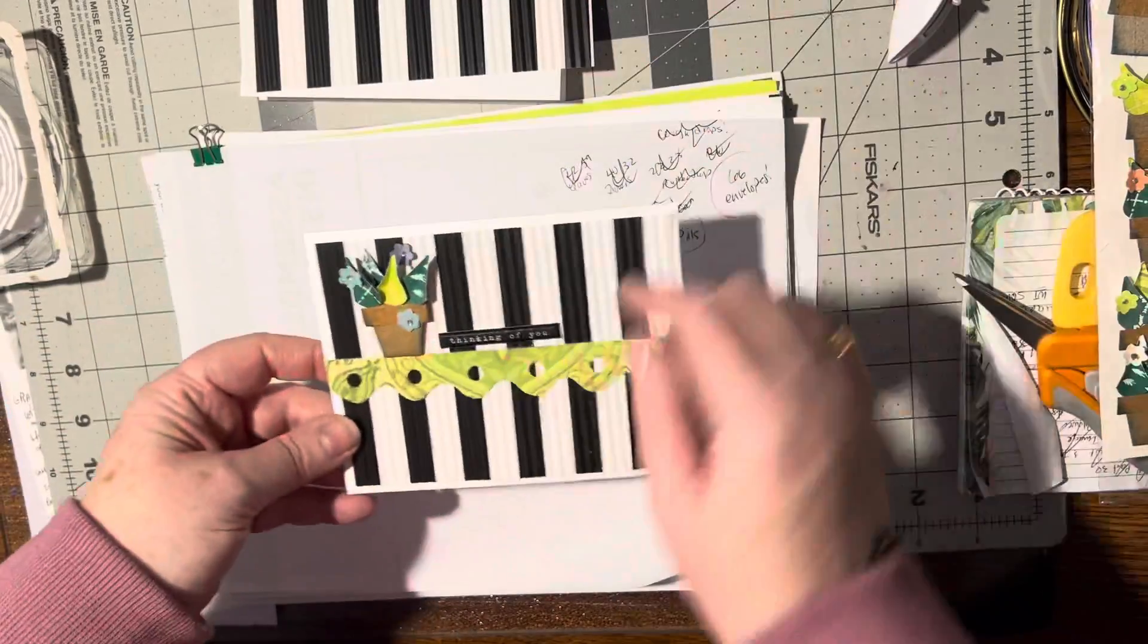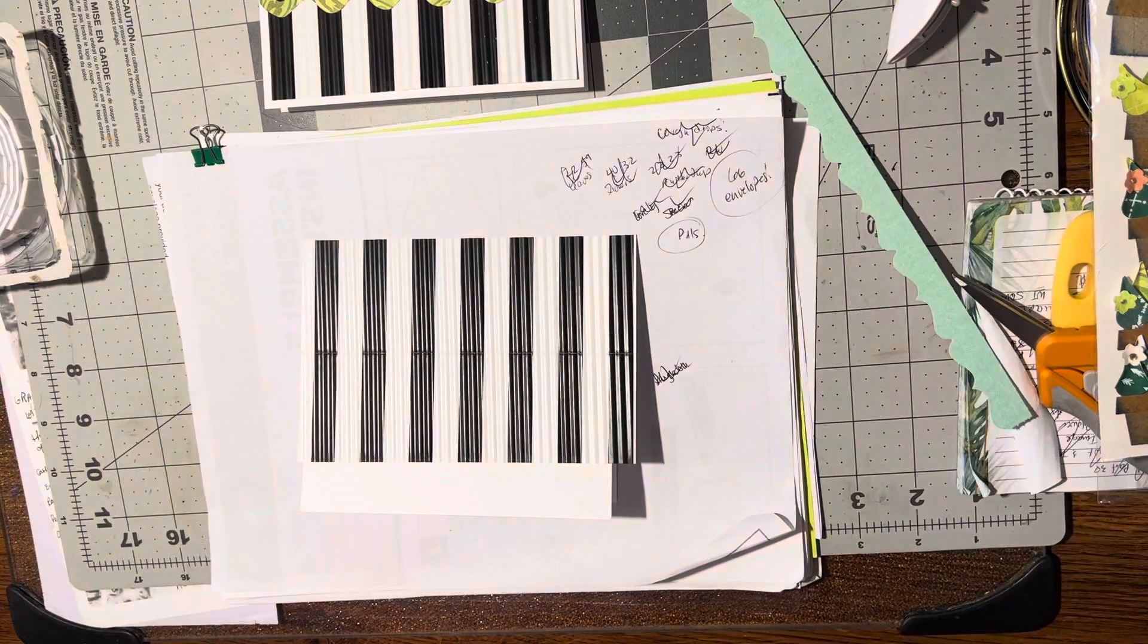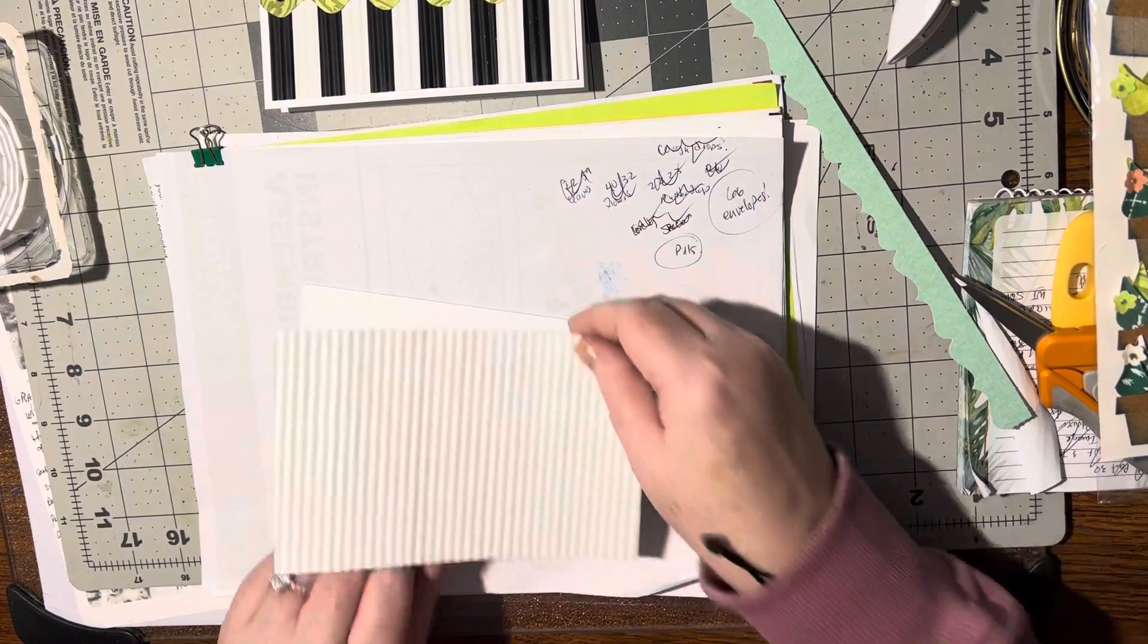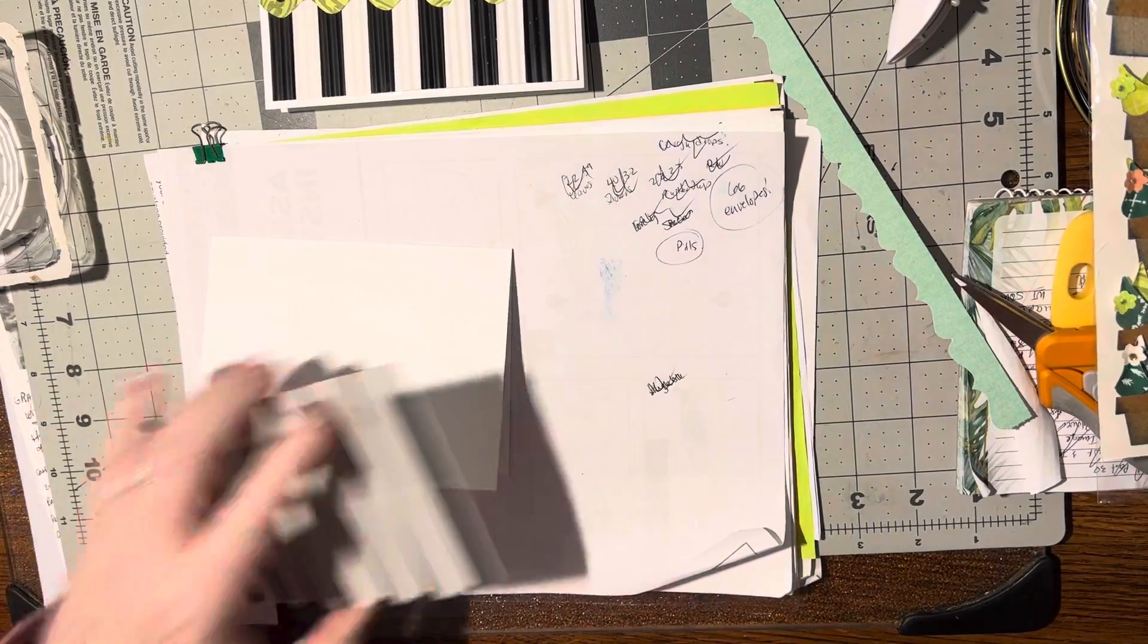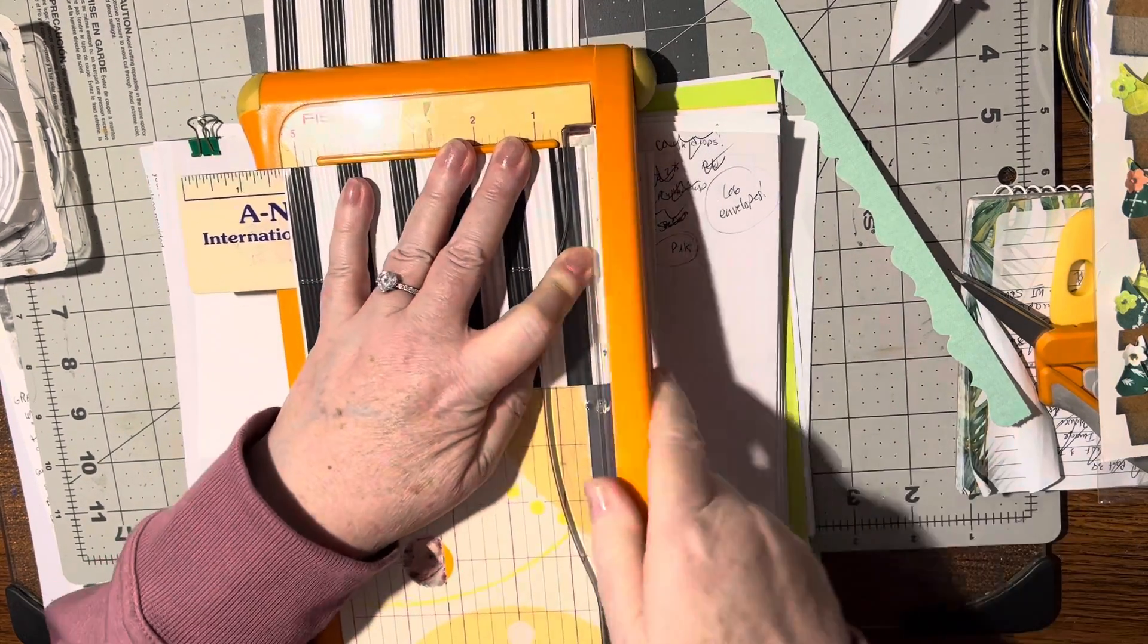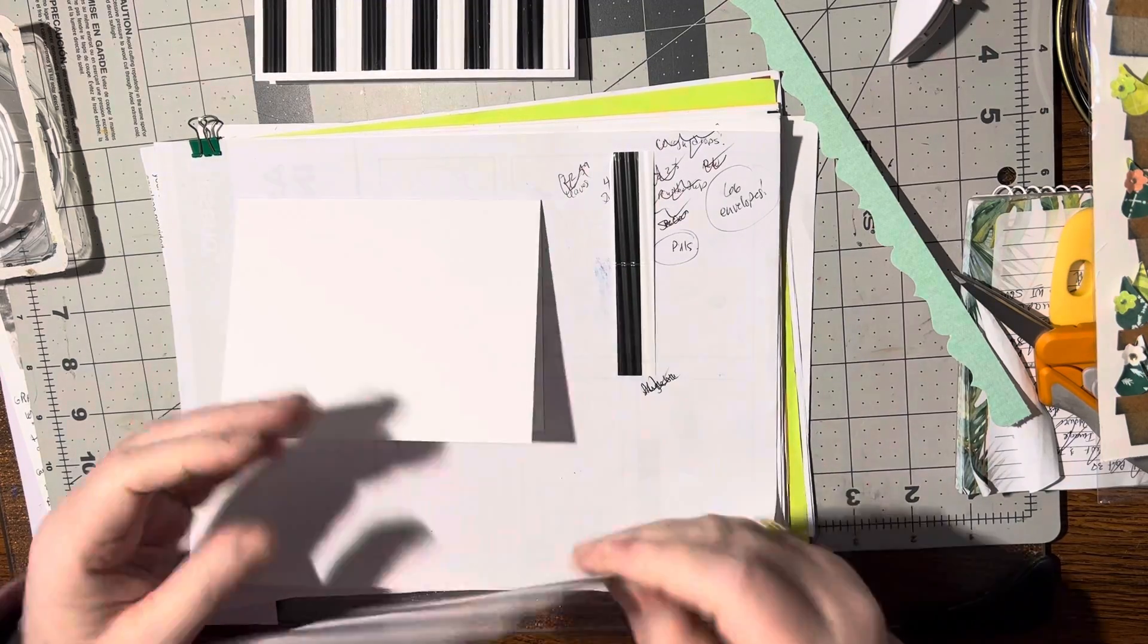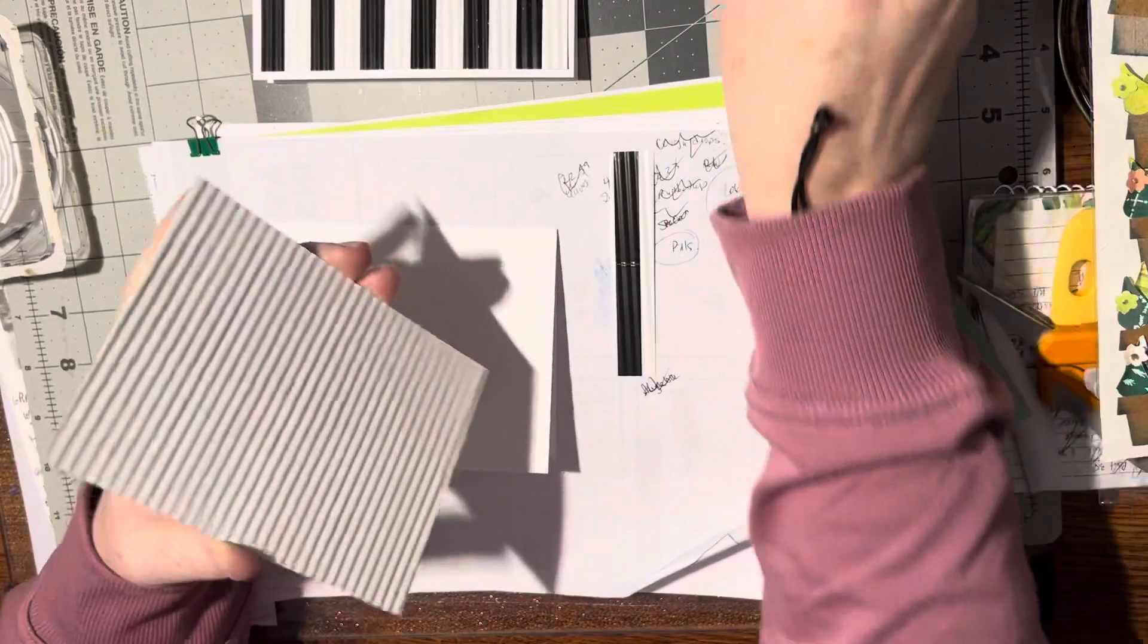I'm going to show you how I put this together. All righty, so first things first, we need to cut this down to size. We need this to be five and a quarter. There, all righty. Oh, that's right, I'm out of my tacky glue.